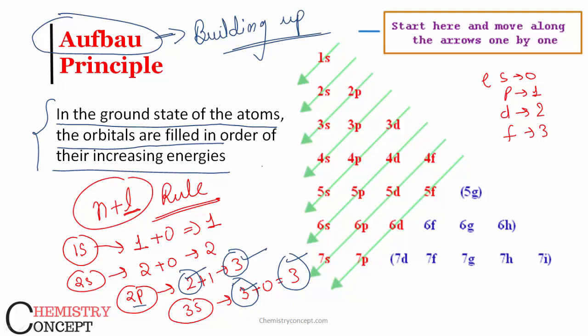Now you know why 3d orbitals are filled first and then we go to 4p orbital. Because in 3d it is three plus two, that is five. In 4p orbitals, it is four plus one, again five. Both have five, but in 3d there is a three which is of lower energy.